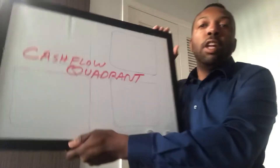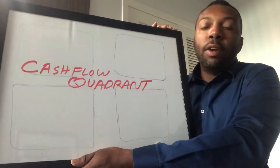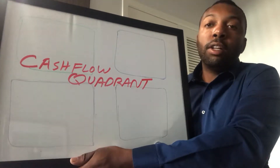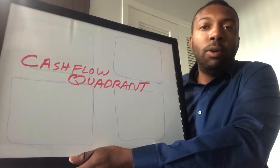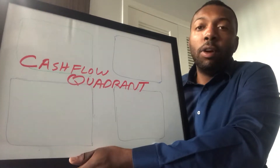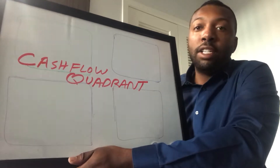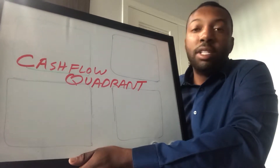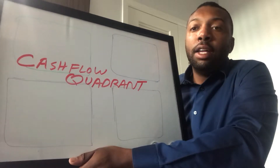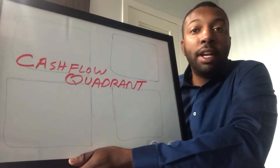The third concept I want to talk about today is called the Cash Flow Quadrant. You may have heard of the author Robert Kiyosaki — he's been around a while. Oprah interviewed him back in the day. He's a real estate investor, entrepreneur, and multi-business owner who had a story about having a rich dad and a poor dad.